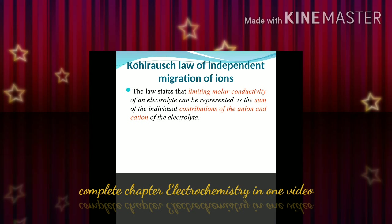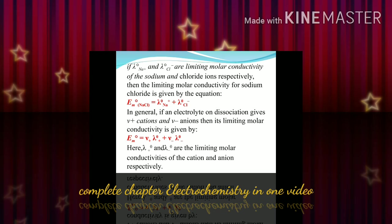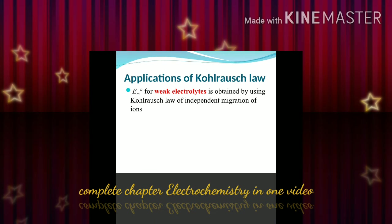The determination of limiting molar conductivity for a strong electrolyte can be determined by Kohlrausch's law of independent migration of ions. The definition of Kohlrausch's law: it states that ions migrate independently. For example, with NaCl, it is the addition of cation contribution plus anion contribution.